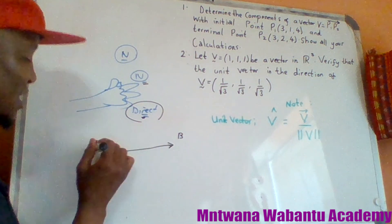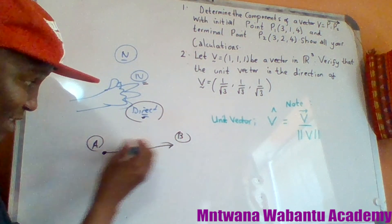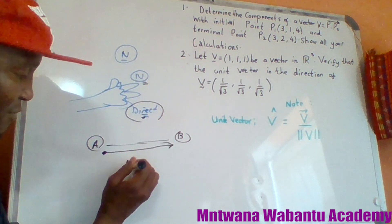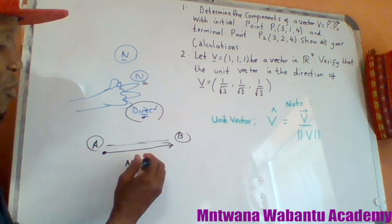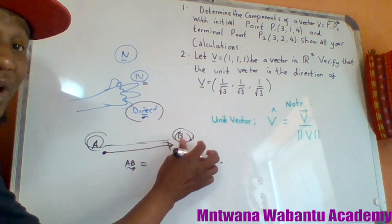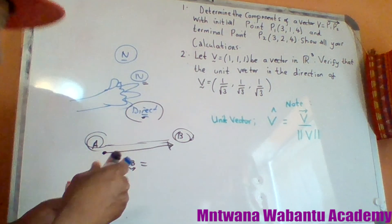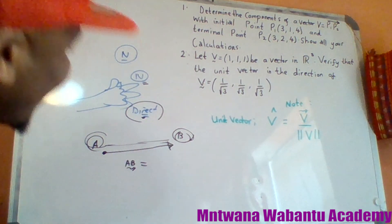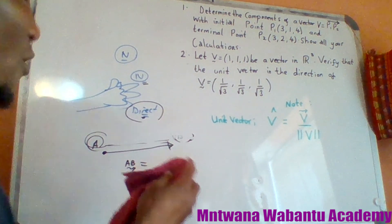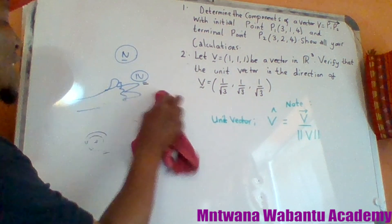Let's say this is point A and this is point B. To get vector AB, you must take the final point minus the initial point. So you take the coordinates of the head of the vector minus the initial point — that's how you find a vector.